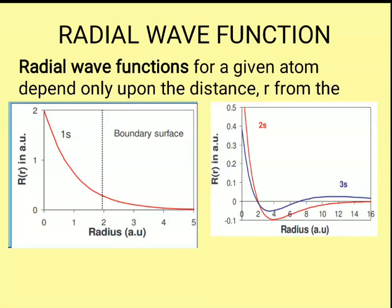Let us now start radial wave functions. What are radial wave functions? Simply, it is the graph between the radial wave function and the distance. The radial wave function only depends upon the distance. When we want to determine the position of an electron, we can determine its distance from the nucleus as well as at which angle that electron is present. When we only talk about the distance from the nucleus, we talk about the radial wave function.